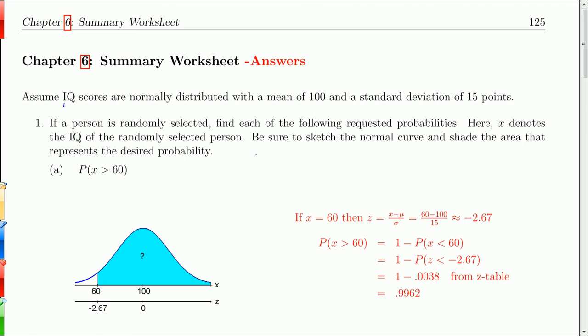For the first set of problems we have a little piece of preliminary information. We're talking about IQ scores. We're going to assume they are normally distributed with a mean of 100 and a standard deviation of 15. So for this first group, if a person is randomly selected, find each of the following requested probabilities. In this case, X denotes an IQ score of a randomly selected person. And I want you to sketch the normal curve and shade the relevant areas for these problems.